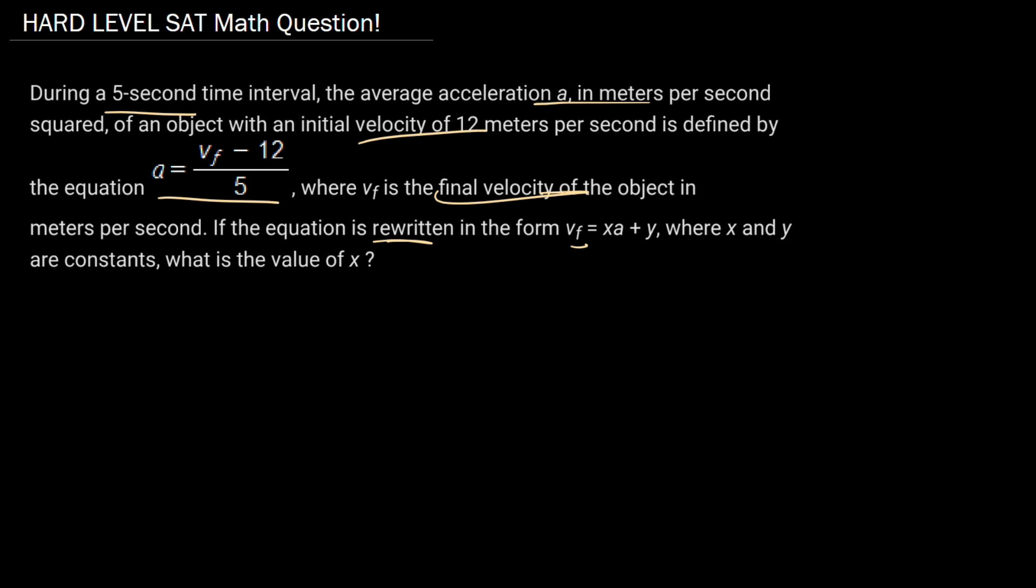So here's the first thing we're going to need to do. We need to isolate this vf. Let's take a look at this equation. We have a equals vf minus 12 over 5. We immediately see that we need to get rid of this 5 in the denominator, so let's multiply both sides by 5.